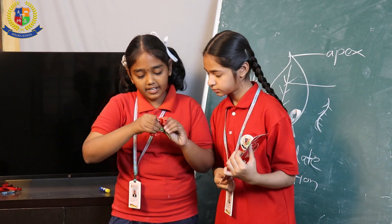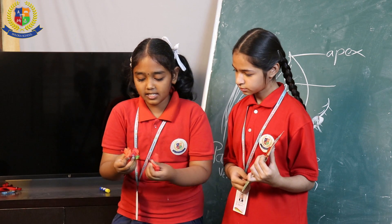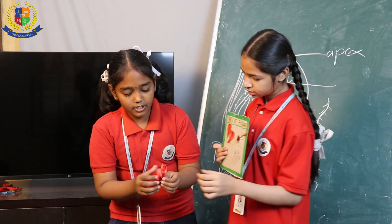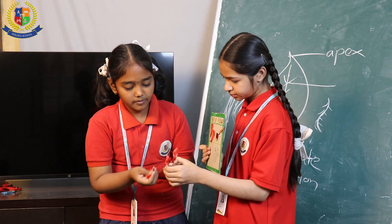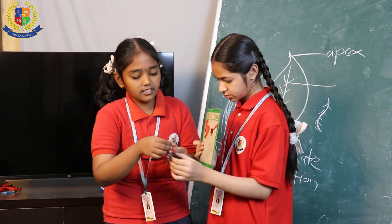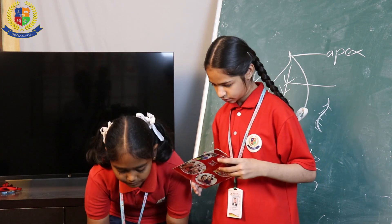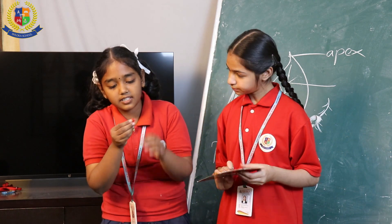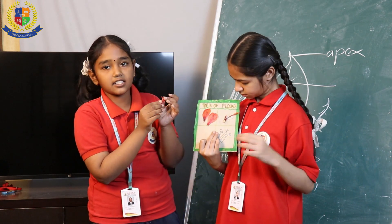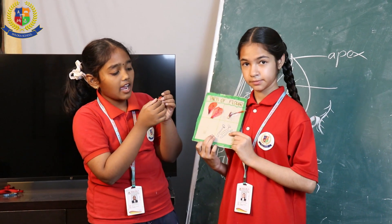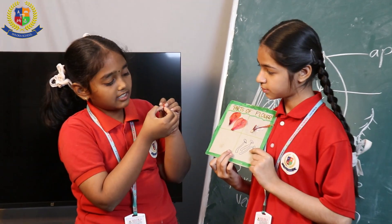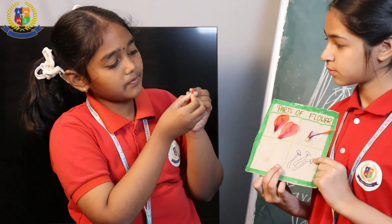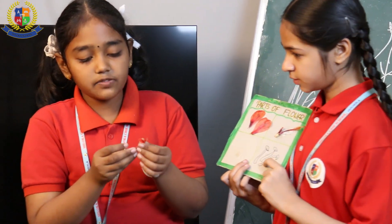Now if I separate the petals, here we can see one tube-like structure. Here we can see some yellow-coloured parts. They are called stamens. The yellow colour parts are called the anther, and some red-light parts are called the filament.